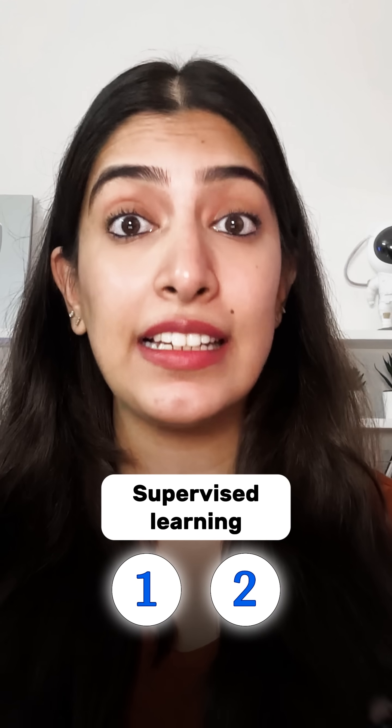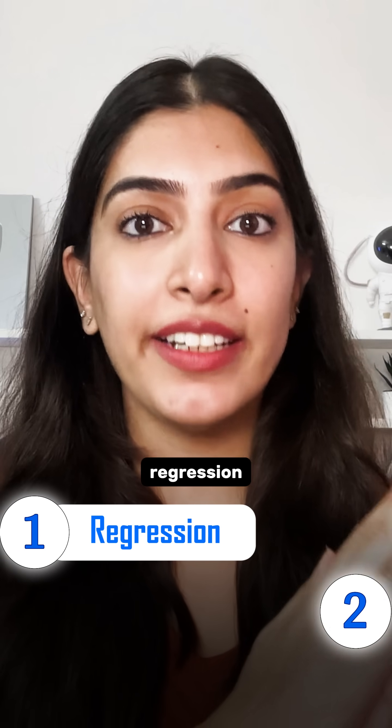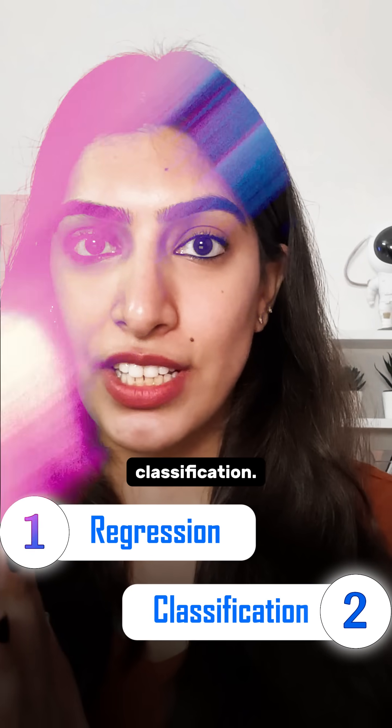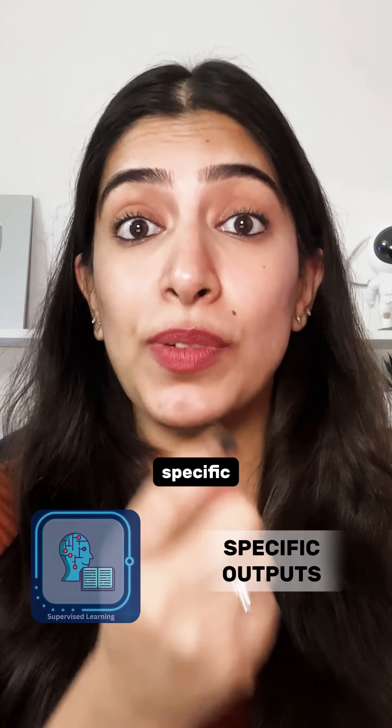These are the two types or categories of supervised learning. One is called regression and the other is called classification. Supervised learning is about specific outputs.